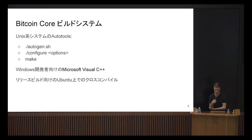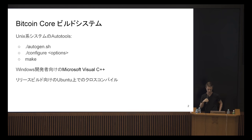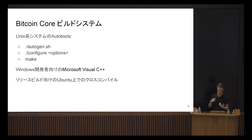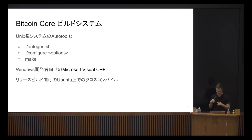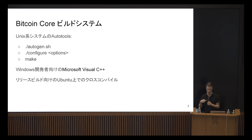You just type in 'configure' maybe with some options and then 'make' — that's it. Very recently we added support for MSVC builds, mostly for Windows developers to do native builds and not having to switch between Linux and Windows all the time. For our release builds we use cross-compilation, which is currently only supported on Ubuntu.